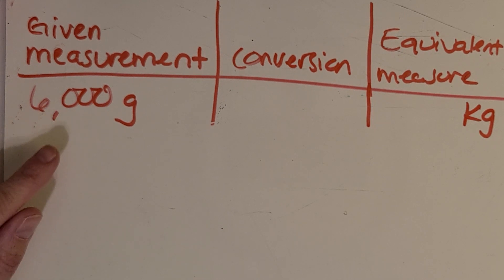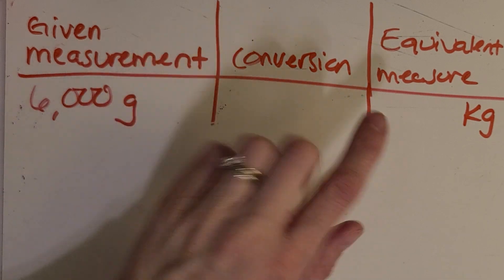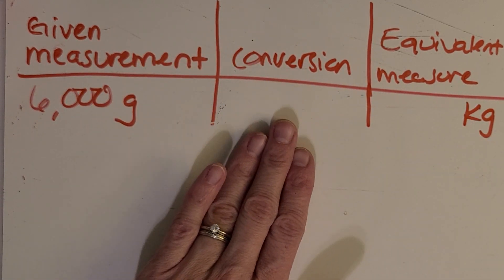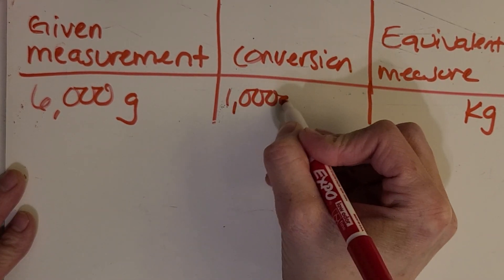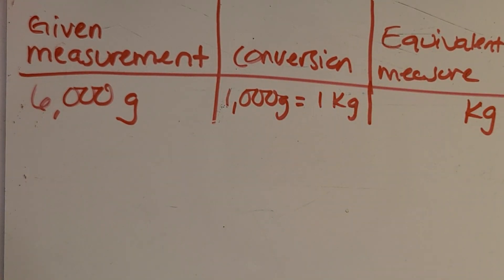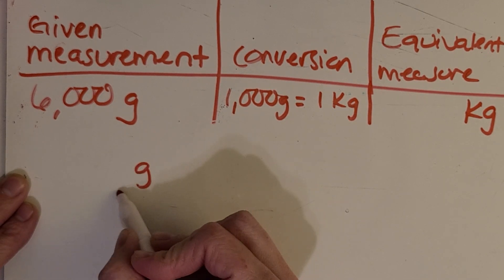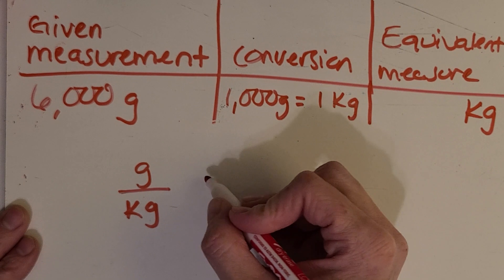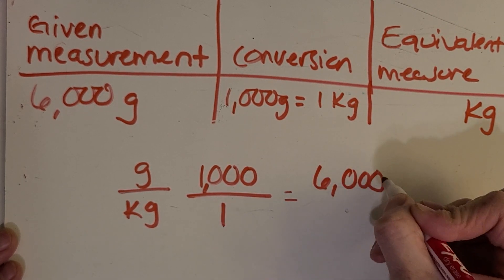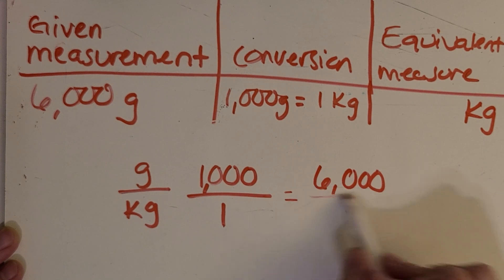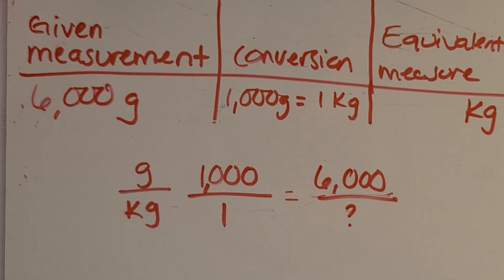Now we have a problem starting with 6,000 grams and we want to convert to kilograms. First, we need the conversion rate: 1,000 grams equals one kilogram. Let's set up that proportion — grams to kilograms — so we have 1,000 to one. Then we have 6,000 grams up top, and here's the mystery amount we need to find. Pause the video and see if you can figure out how many kilograms are equivalent to 6,000 grams.